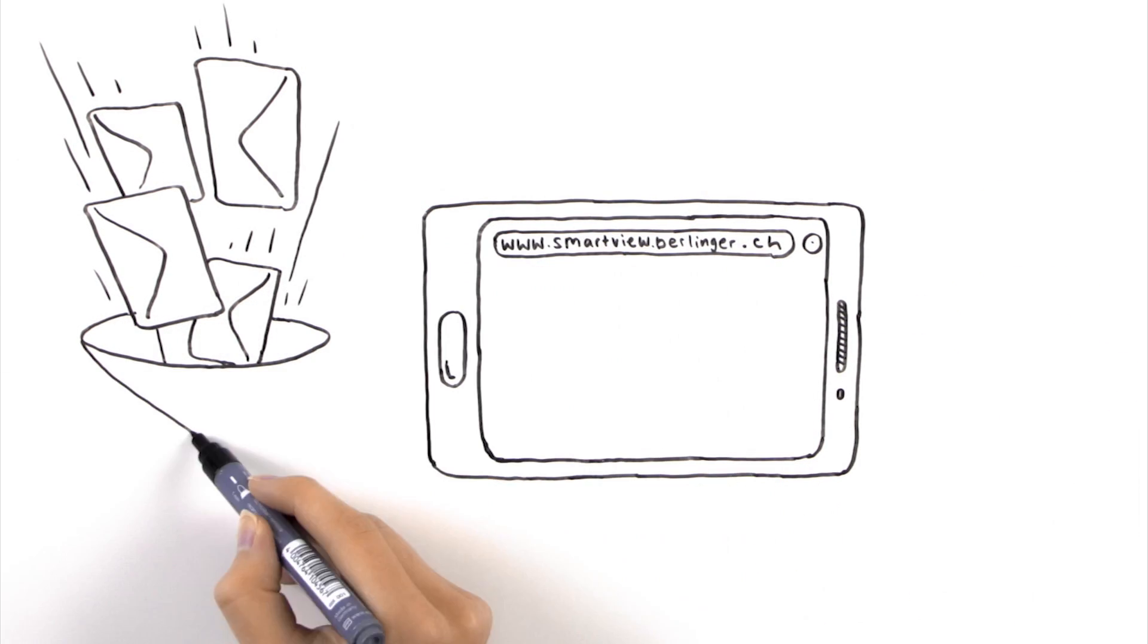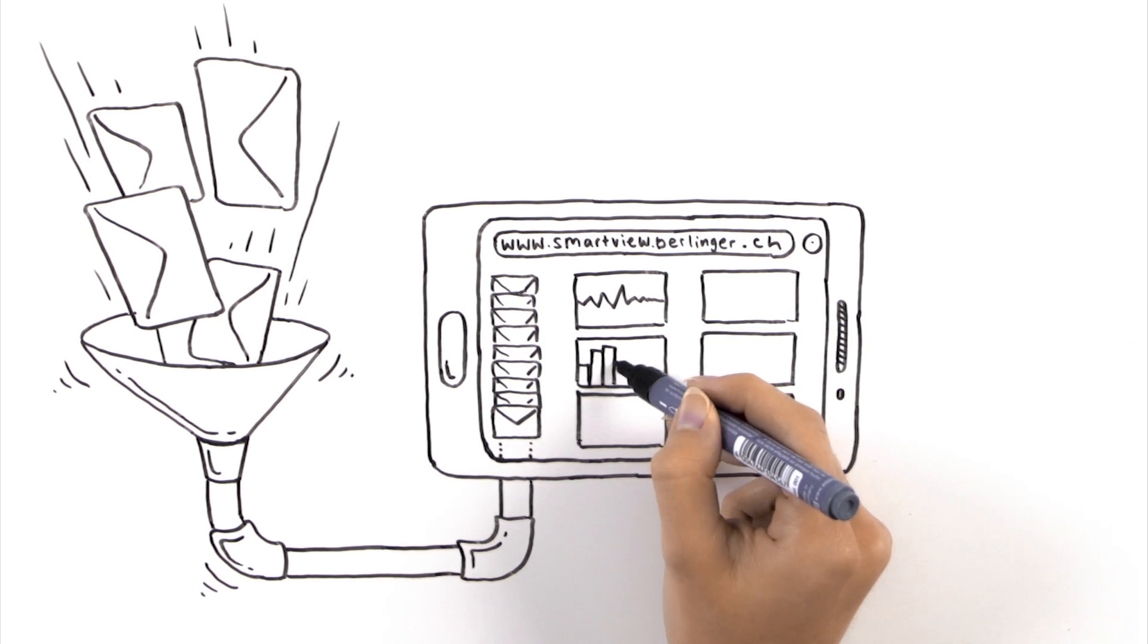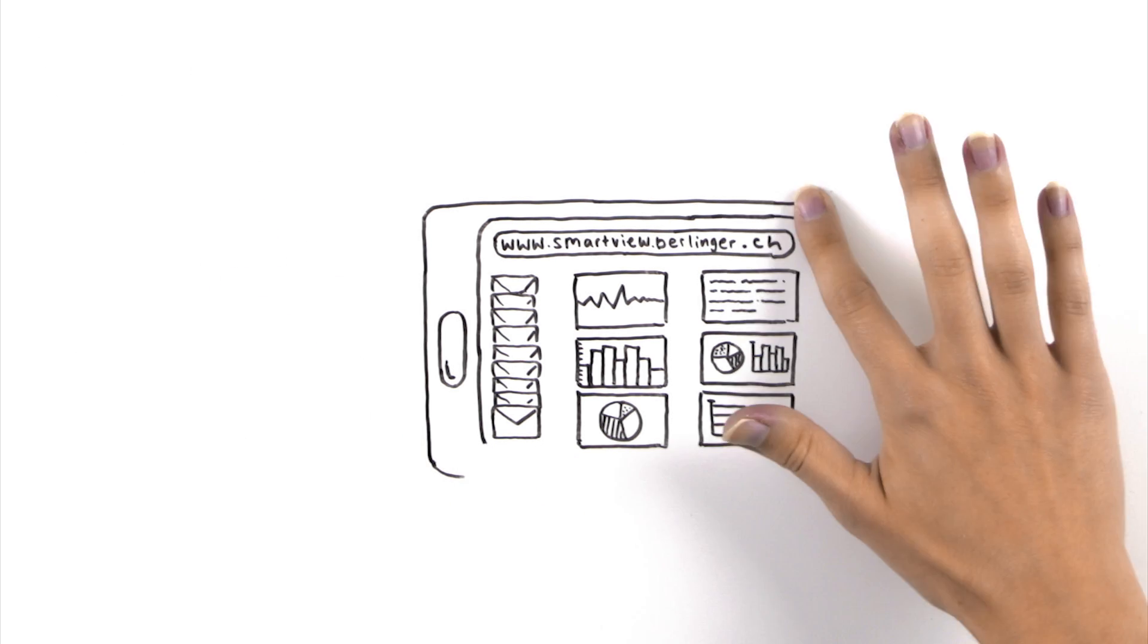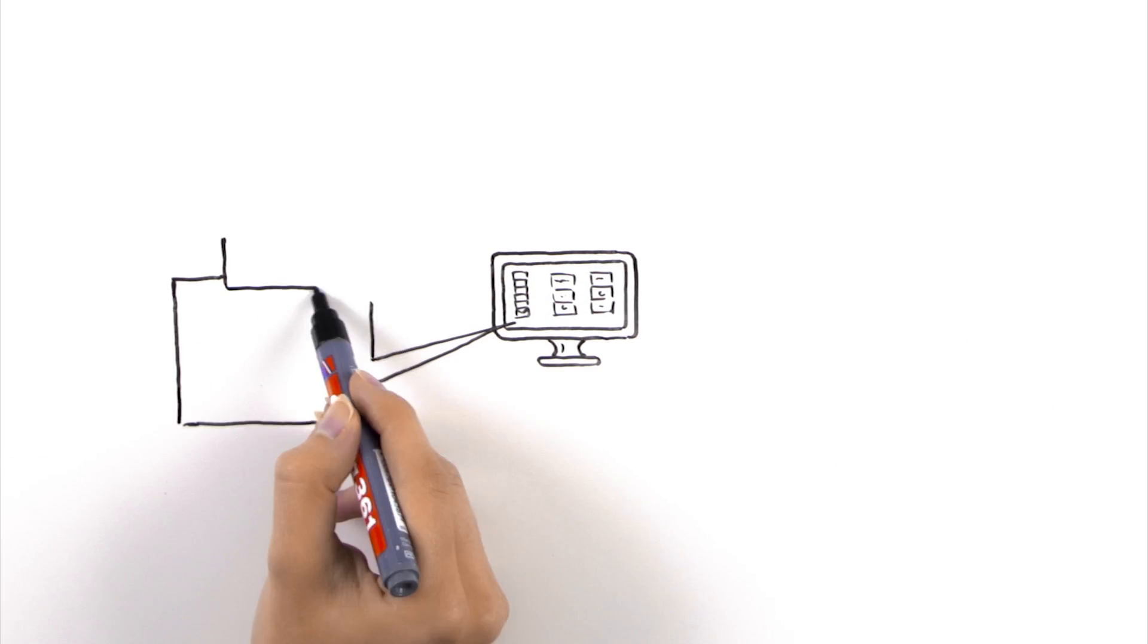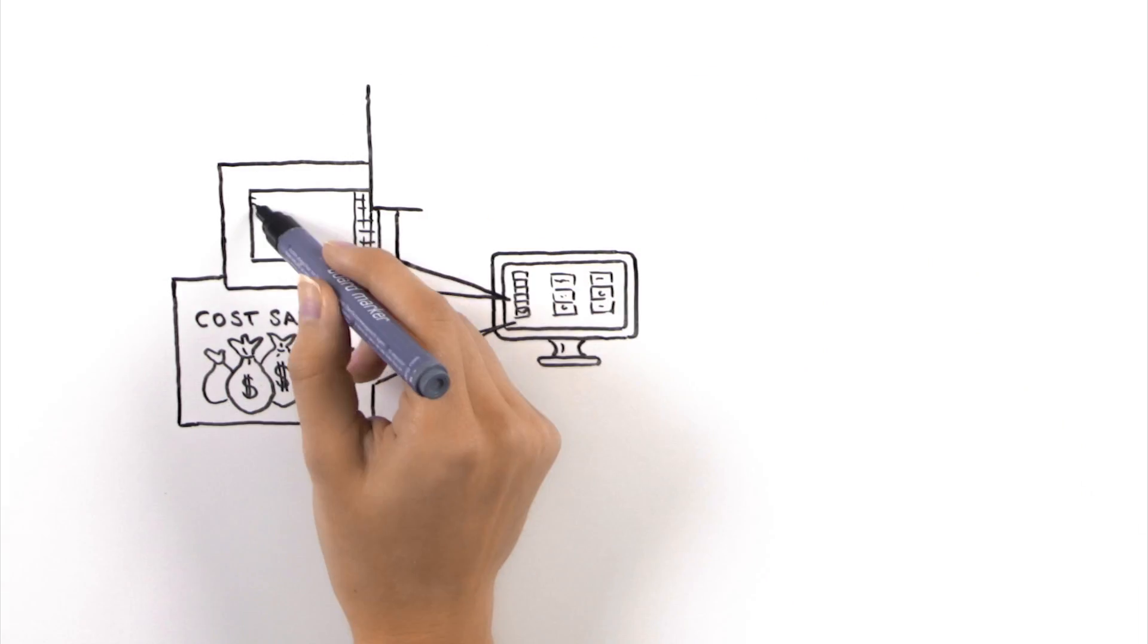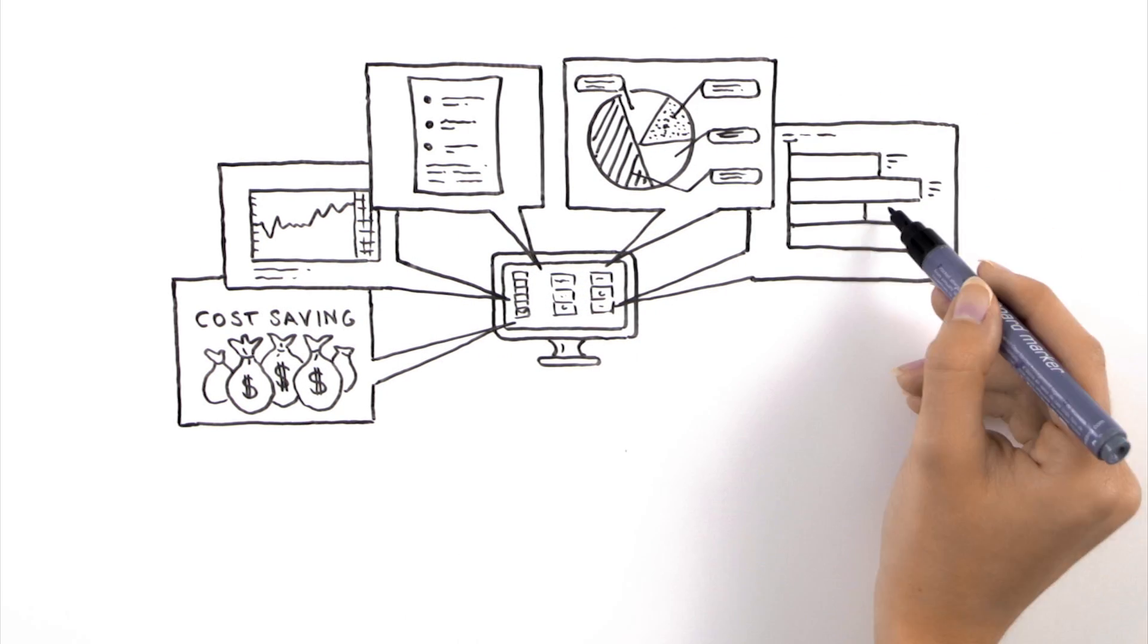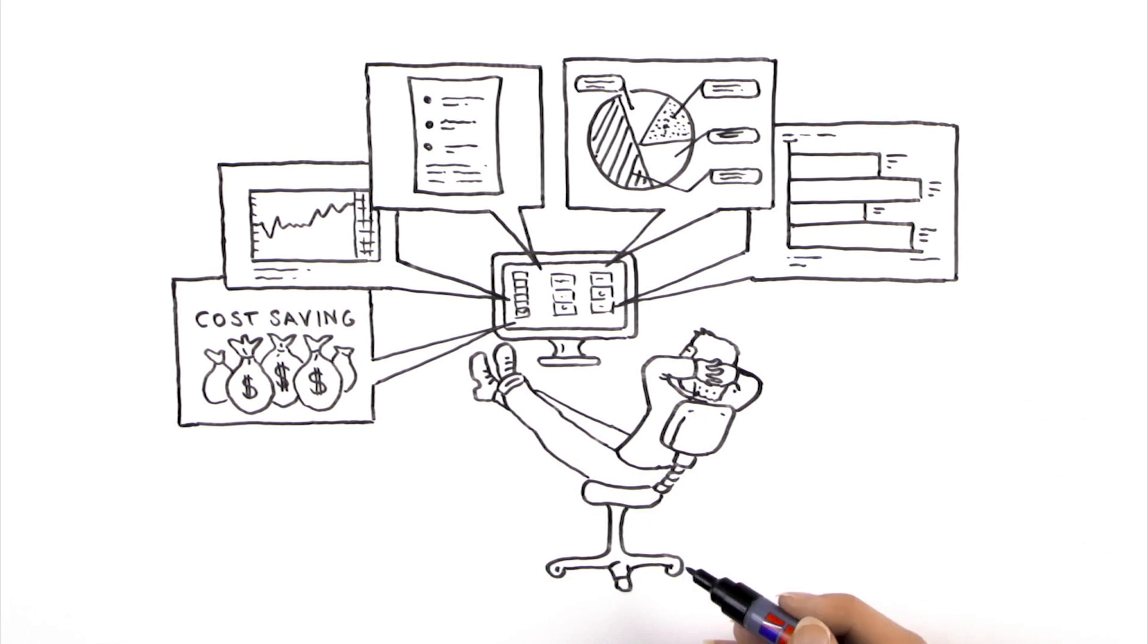It processes all the data automatically and sorts it according to need. SmartView can also simply and effectively manage data from the existing ERP. It then stores everything in a secure, central data bank. This means Paul can save time and money. Whether Paul is looking for statistics, reports, milestones, or trends, with SmartView, he can simply and quickly produce these whenever and wherever he needs them.